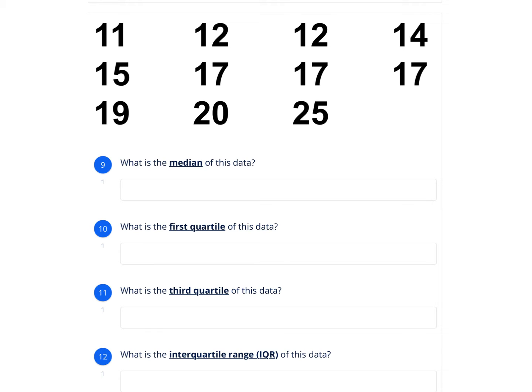I'm going to write it out. But you guys will have one on your test where it's not in order, so you need to put them in order first. So on mine, I'm going to put 11, then 12, then 12, then 14, then 15, then 17, 17, 17, 19, 20, and 25. So we always put our data in order first.